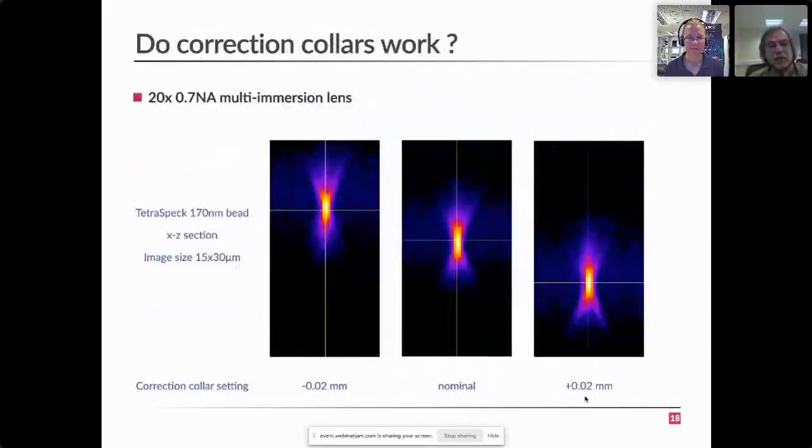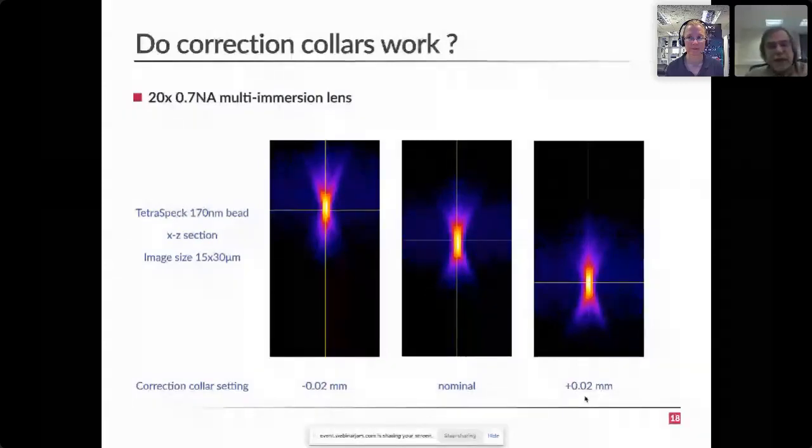A related question here is, do the correction collars work? And we did throw this around this fluorescent star test on our multi-immersion lens that has a correction collar. Admittedly, here NA is pretty low and so the effect is not as dramatic as it might have been otherwise. But you can clearly see nominal setting. So that's another thing I would like to draw your attention to. Nominal setting is not necessarily always the best setting for those correction collars. In this case, it's probably somewhere between nominal plus 0.2. But this also highlights the difficulty in using those correction collars. They need to set them correctly and to make a proper test. And that's probably the reality of life.